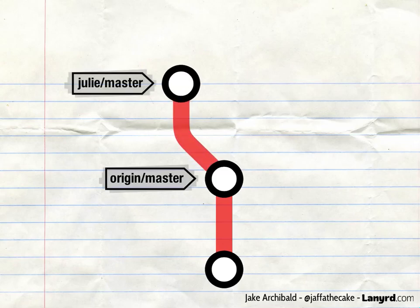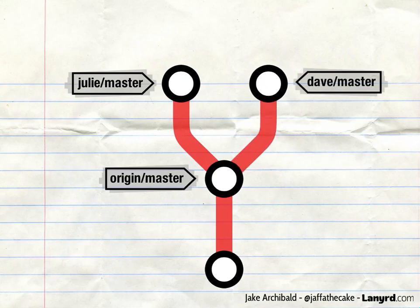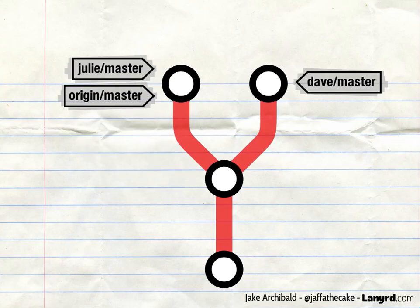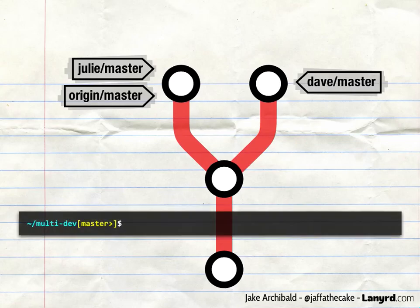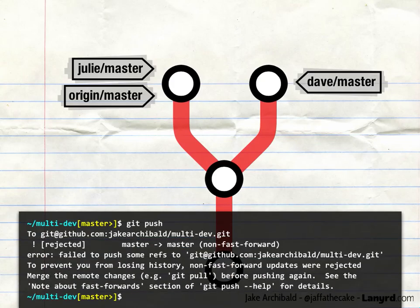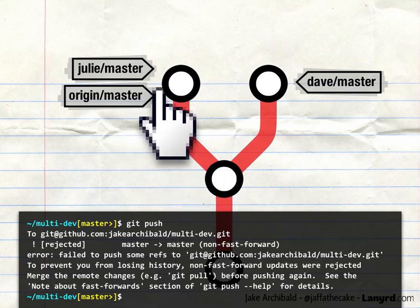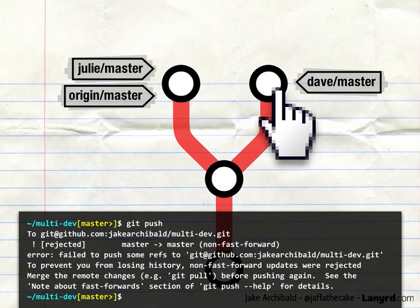Then this happens. Julie makes a new commit — she adds a file and commits it. Now her master branch is ahead of GitHub's master branch. Dave does the same — he adds a different file and commits. Julie runs git push, and that works fine because origin master was able to move onto that commit through one of its ancestors. But here's what happens to Dave: he runs git push and it fails. He gets an error message from GitHub, because origin master cannot safely move onto his commit. To do so, it would have to move backwards and then around, and in doing so it would lose Julie's changes — which, of course, would be completely rubbish for a version control system to do. This is why branches can only safely move forwards.